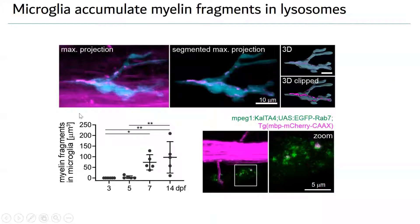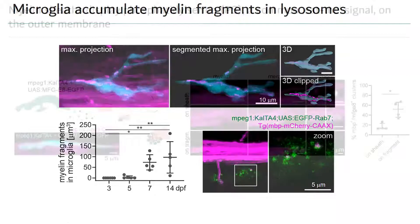We co-labeled microglia with markers of late endosomes and lysosomes — here using Rab7 — and found that fragments of myelin are present within the lysosomes of microglia during myelin development in zebrafish, starting around seven days post fertilization.